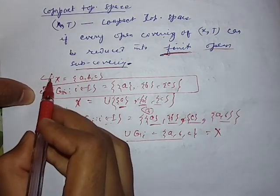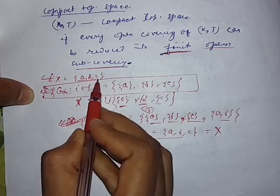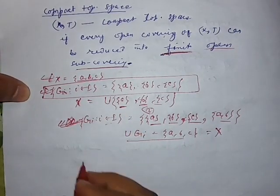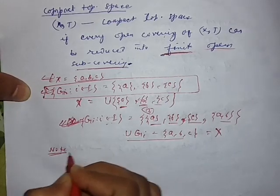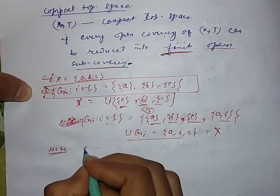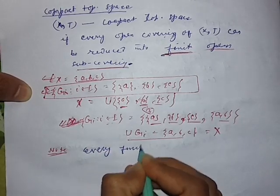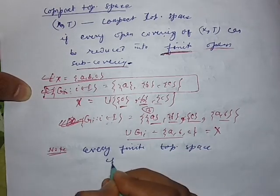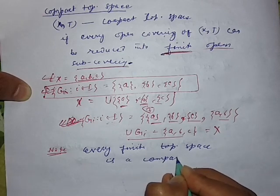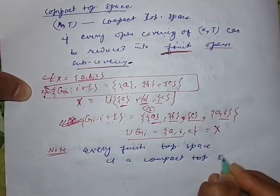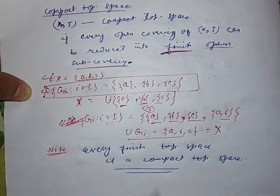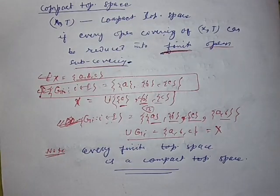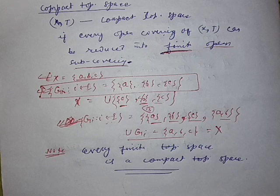We can note here that if we take any subset that is finite, it is a compact topological space. So we can note that every finite topological space is compact. I hope you understood the meaning of compact topological space. If you have any doubts, please comment in the comment box and I will answer. That's it for today, thank you.